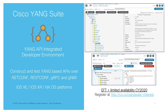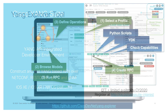When working with the Yang data models, I'm going to be using the Cisco Yang Suite tooling. We have an EFT open for this with limited availability this year, so if you're interested in beta testing this tooling, you can register at the URL below. It works with iOS XE, XR, and NX, as well as all of the programmatic and standards-based APIs like NetConf, RESTConf, gRPC, and GNMI.